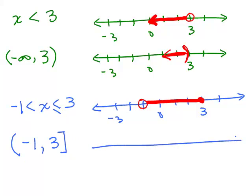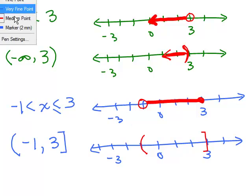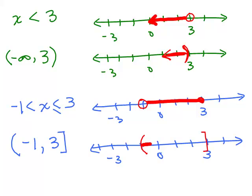Let's see what that looks like on a graph — it matches up really quite nicely. At negative 1 you have the open parenthesis, and at 3 you have the bracket, and then you fill in to get your solution.